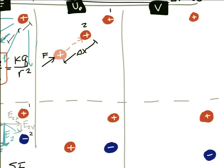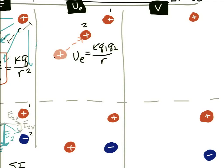Since we can't do a simple calculation, we rely on a calculus-derived result. The electric potential energy U_E is given on your equation sheet as K Q1 Q2 divided by R, where R is the distance between the centers of the two objects.